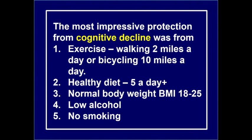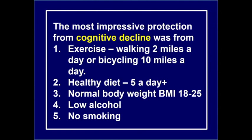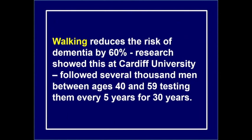The most impressive protection from cognitive decline was found to be exercise — the surprising finding here. Walking reduces the risk of dementia by 60%. Research at Cardiff University followed several thousand men aged between 40 and 60 for 30 years. Options include walking two miles a day or cycling ten miles a day. A healthy diet — though what people consider healthy varies individually. Normal body weight, low alcohol, and no smoking are also recommended factors.